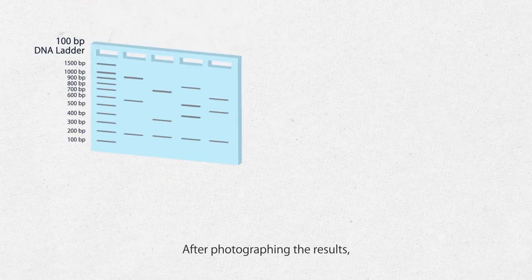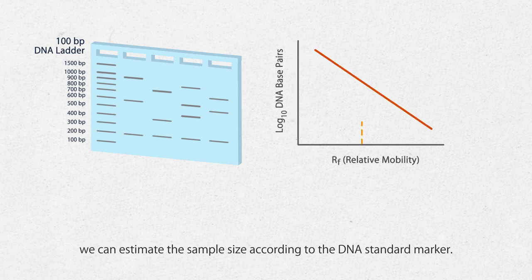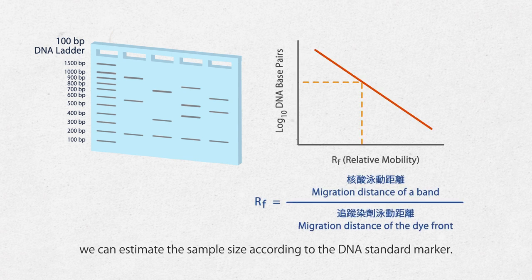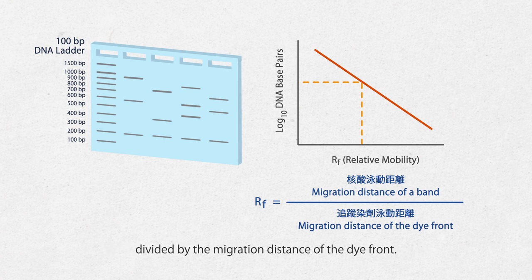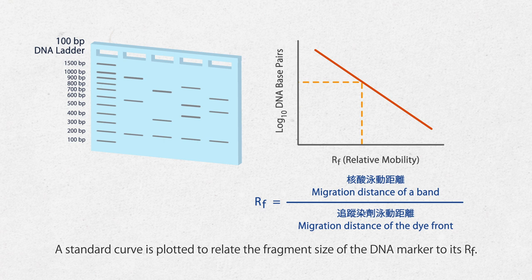After photographing the results, we can estimate the sample size according to the DNA standard marker. Relative mobility, Rf, refers to the migration distance of a band divided by the migration distance of the dye front. A standard curve is plotted to relate the fragment size of the DNA marker to its Rf. Then, the size of the unknown fragment can be determined based on its Rf.